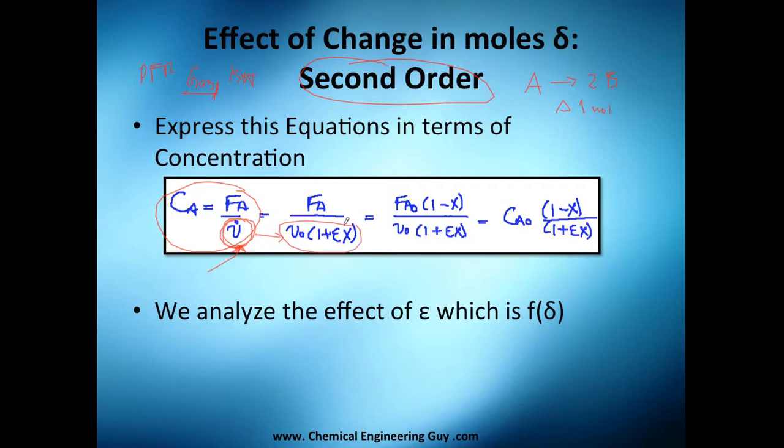How do we account for that is first by accounting in the change of moles and of course the change on conversion. Conversion generally goes up to 1. Now we substitute this data to have it also in terms of conversion, and this will be our term for concentration at any time of A.